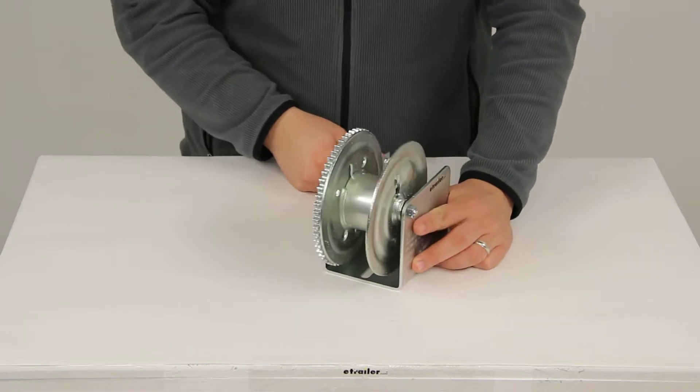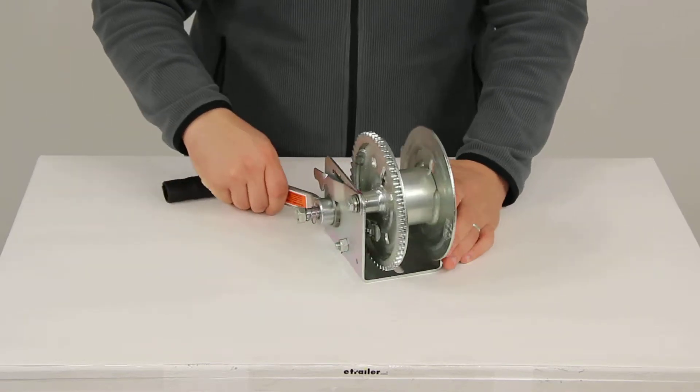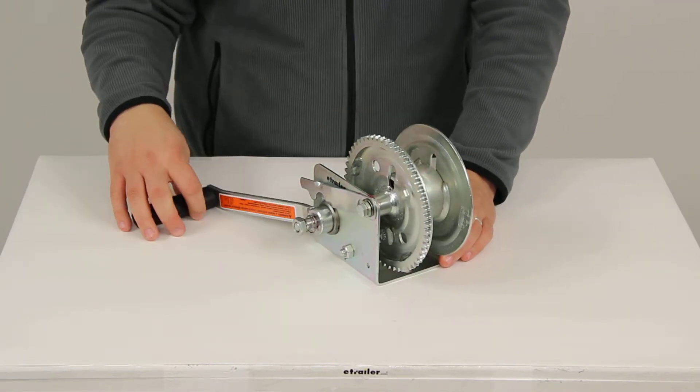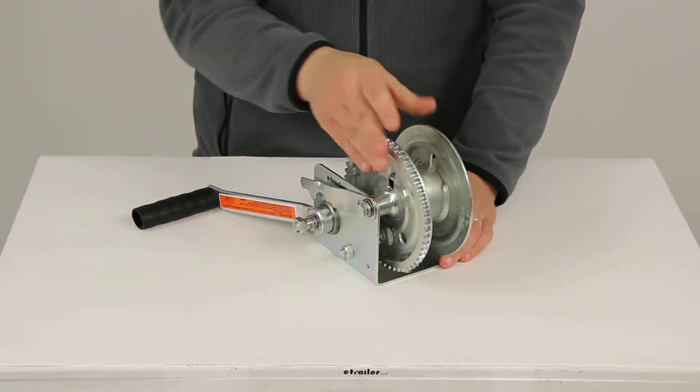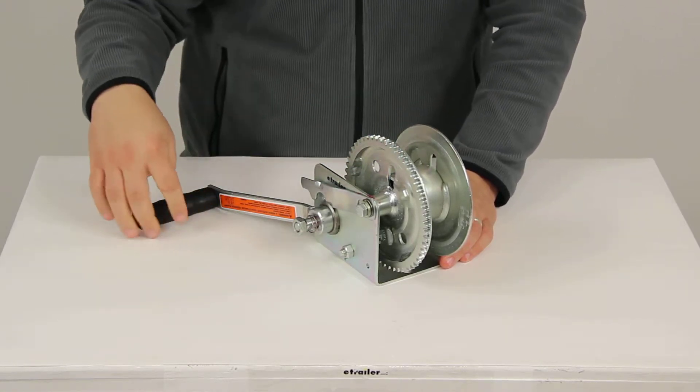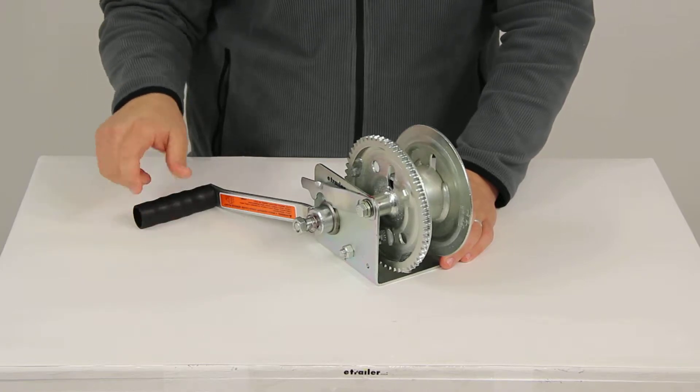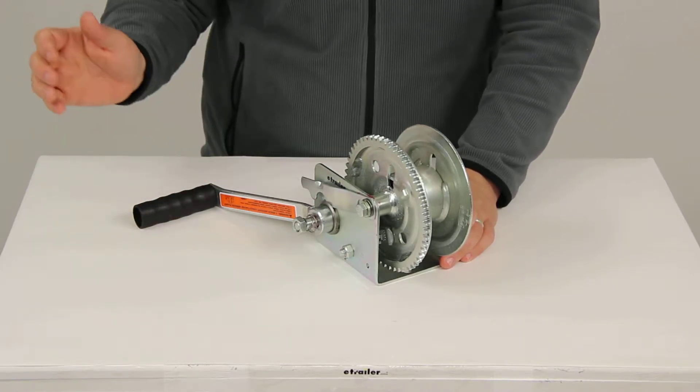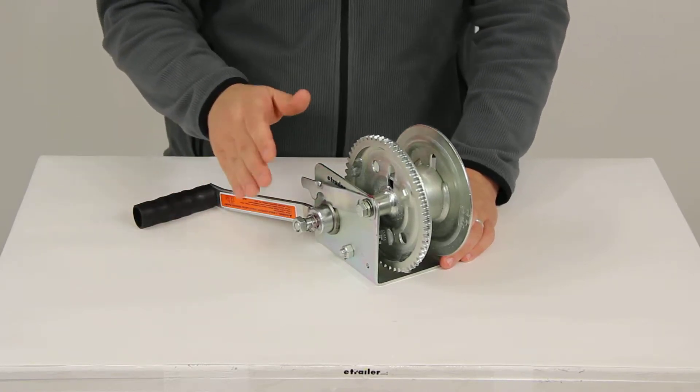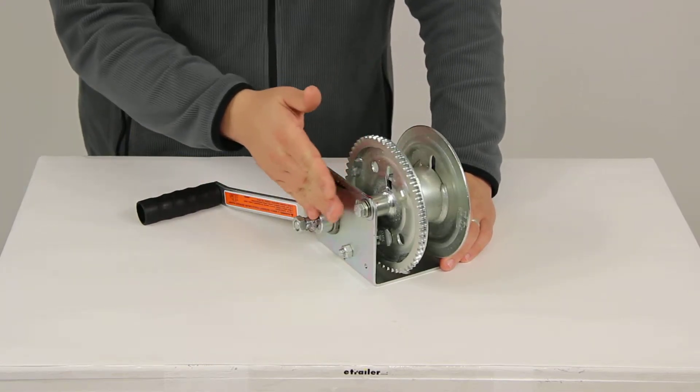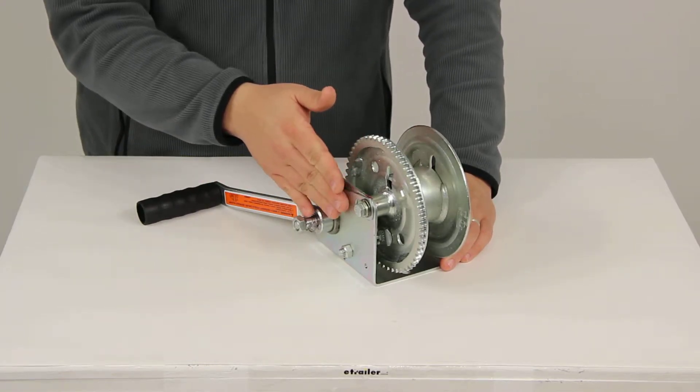The braking mechanism takes effect to lock the load in place even when the handle is released. So if you have that heavy load on the other end of the cable and you're bringing it in, if you release the lever, that load is going to stop where it is. It's not going to disengage and roll backwards. It's going to stop because this has the built-in brake mechanism.